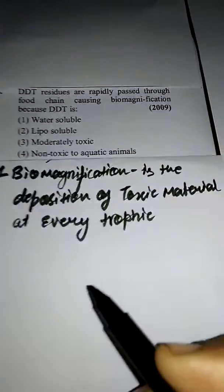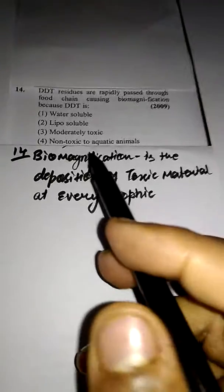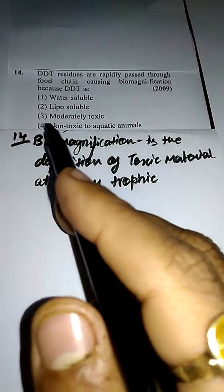Har trophic level pei, yeh thoda thoda deposit ho ta jata hai, jis ki wajay se death ho jati hai. Third, tertiary, quaternary hai, tertiary mein.